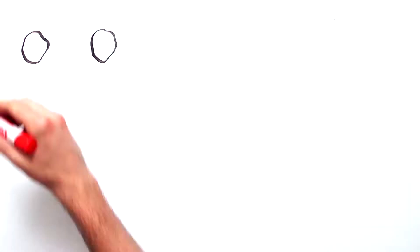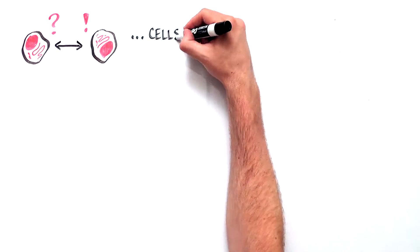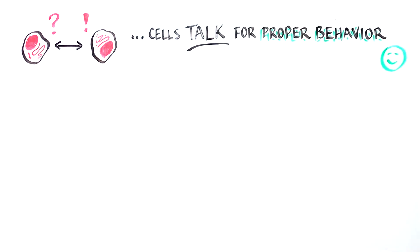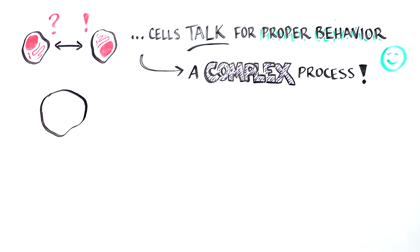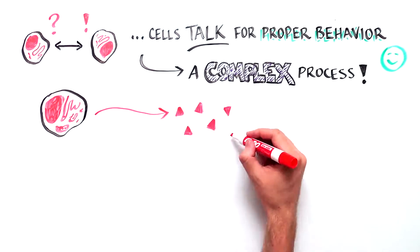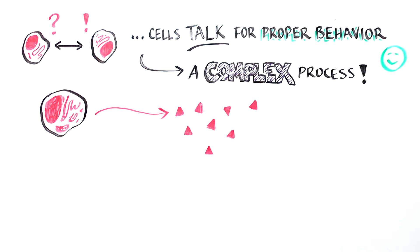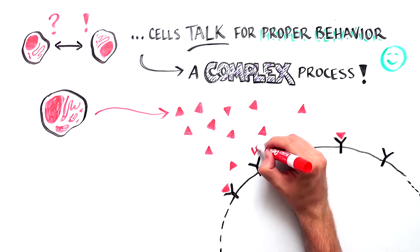You may be surprised to learn that cells do indeed talk to each other to make sure that they are behaving properly. This very complex process works like this. One cell sends a signal, like a protein molecule, which carries specific information to other cells. Those cells have receivers on them and can decide to accept the signal and the information it carries.